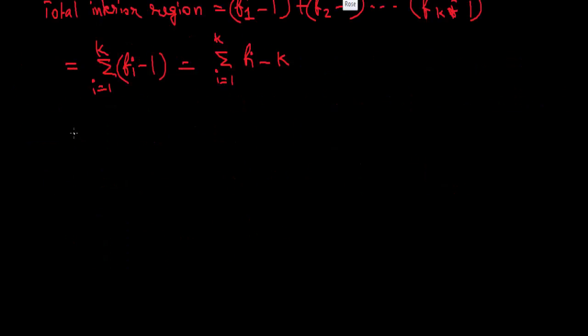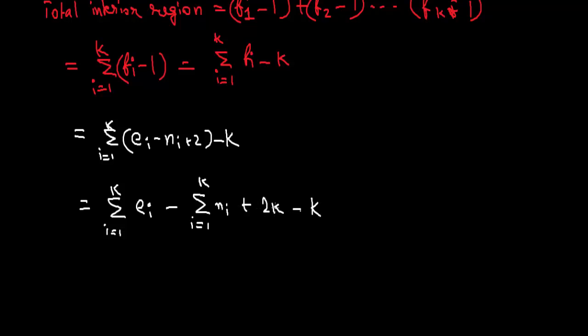We can write this as summation i=1 to K of (Ei - Ni + 2) minus K. This will turn out to be E minus N plus K, because the summation we have already considered then as E and N.